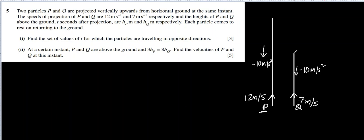I've drawn a smaller line for the 7 m/s particle Q because mass is not important in kinematics — it will reach a lesser height, and the one thrown with higher velocity will reach a higher height. Both were thrown at the same time, so till a certain height they are moving in the same direction. By the time Q reaches its peak, P will still be going higher because it had a greater initial velocity.